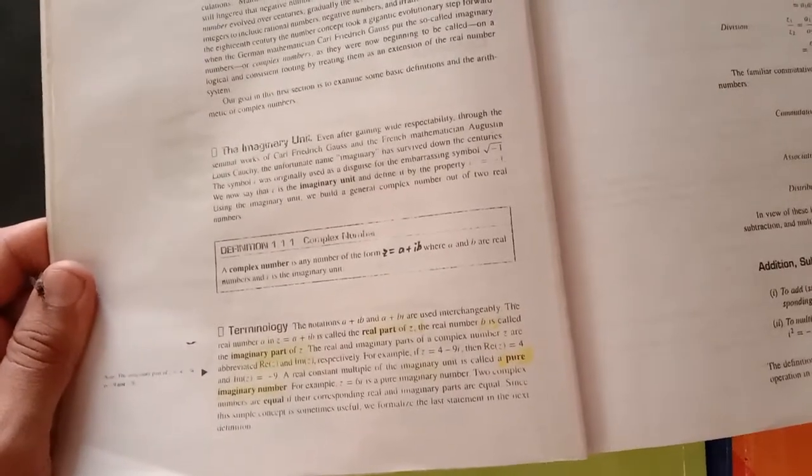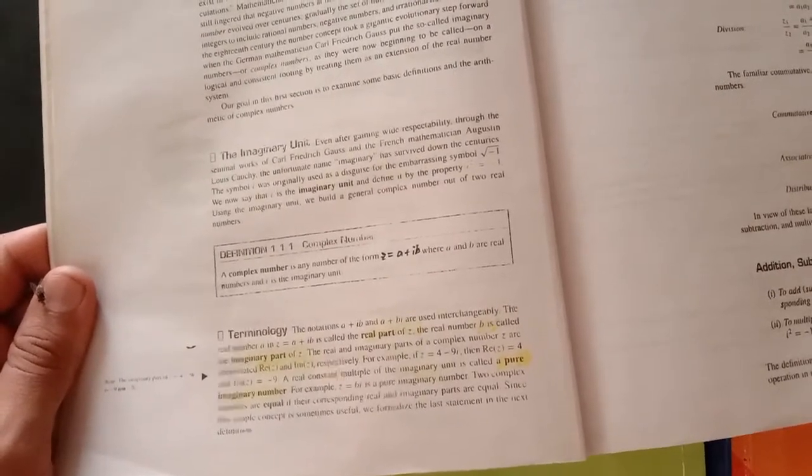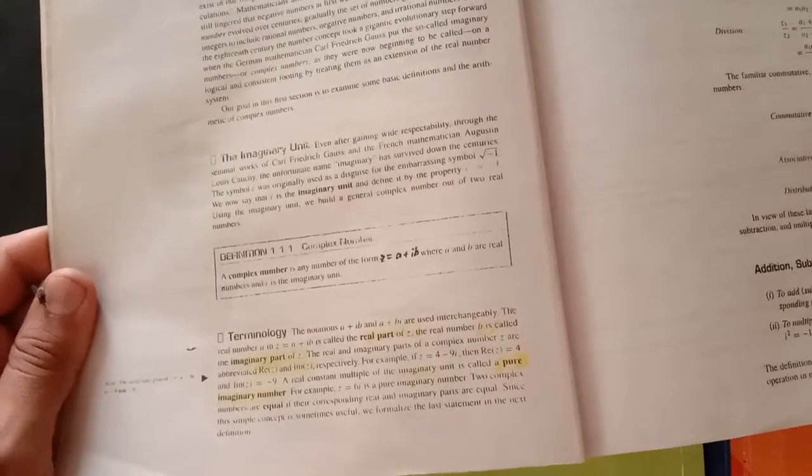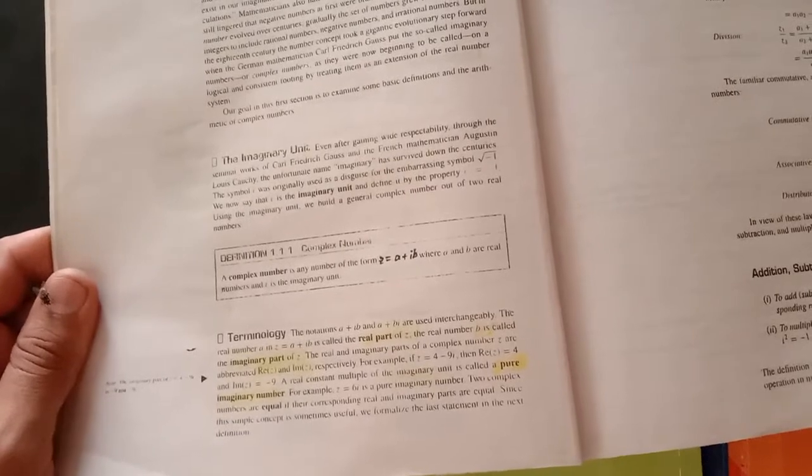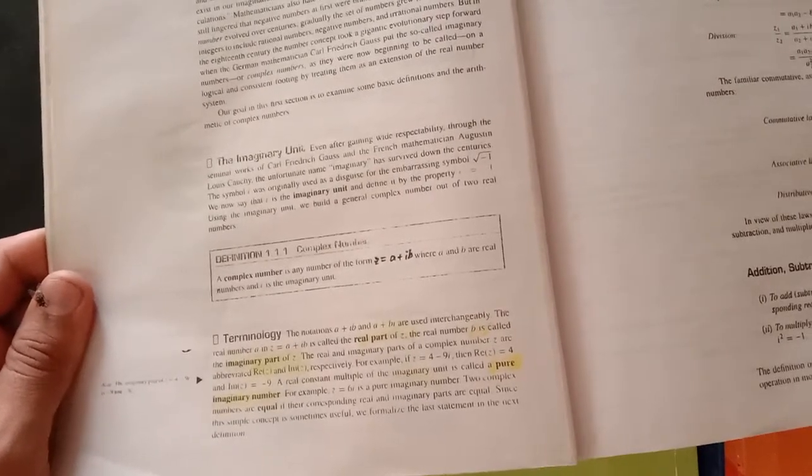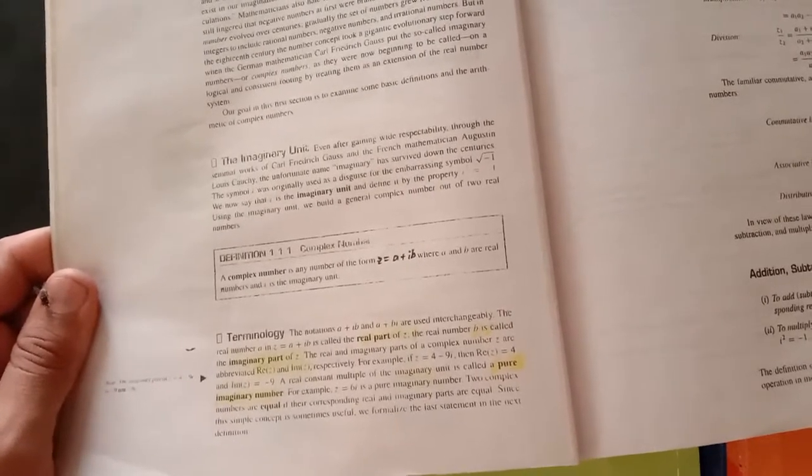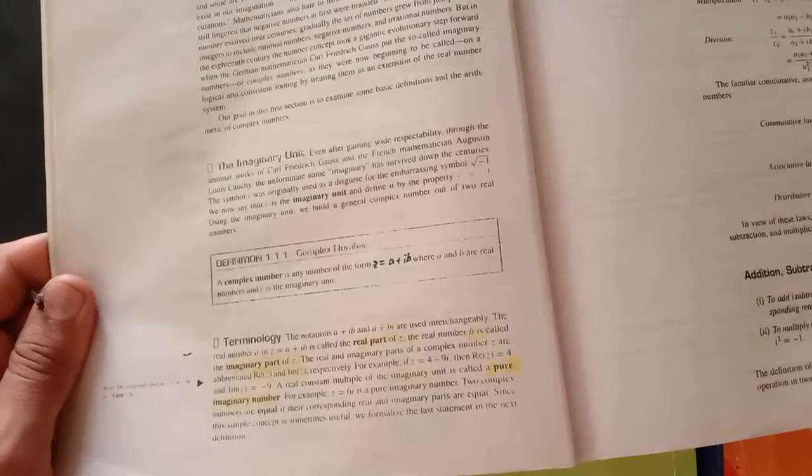The real number A in Z is the real part of the complex number and B is called the imaginary part of the complex number. The real and imaginary parts of the complex number Z are abbreviated RE(Z) and IM(Z).